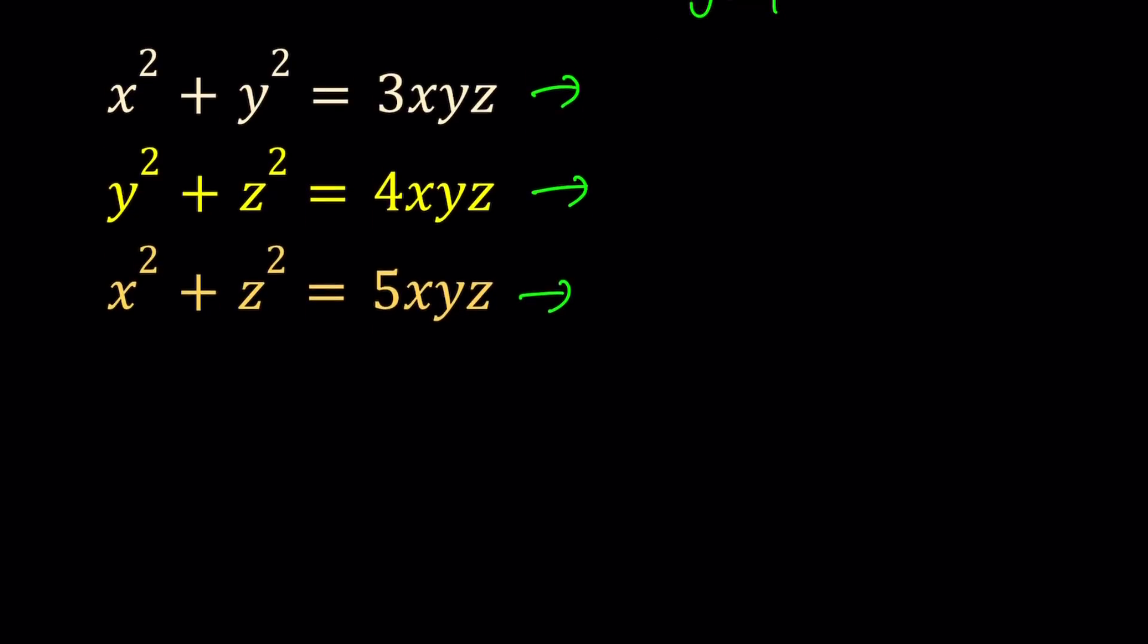So the first equation gives me the following. x squared plus y squared divided by x, y, z is equal to 3, right? And that is going to give me, actually, I could probably just split them up and then set it equal to 3. So this is going to give me x over yz plus y over xz. And as you know, this is going to equal 3. Great.